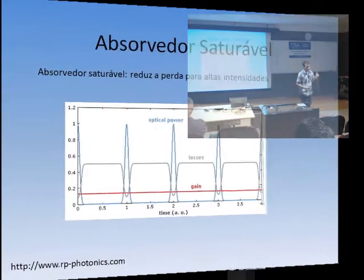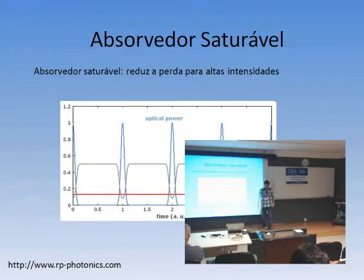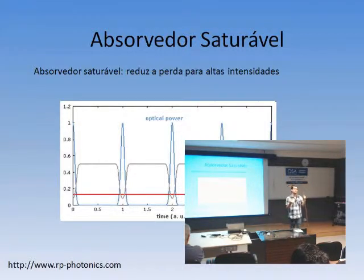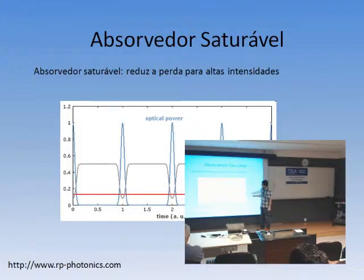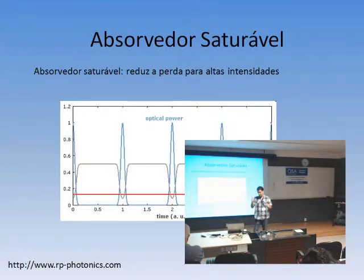Absorvedor saturável. Para você ter um laser, você tem que ter ganho em alguma faixa de frequência para ter o regime laser. Aqui você tem as perdas num nível e aqui o ganho. Para ter um laser de modos travados, você precisa ter um pulso circulando dentro da cavidade. Quando esse pulso passa pelo meio de ganho, a sua perda diminui e cruza a linha de perdas. Naquele momento em que o pulso passa pelo meio de ganho, o ganho fica maior do que as perdas, e você tem a potência óptica — você tem um pulso em cada momento.